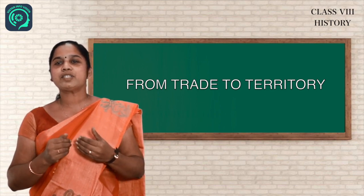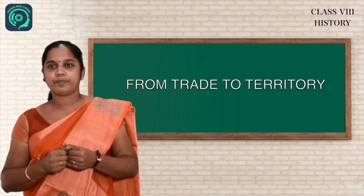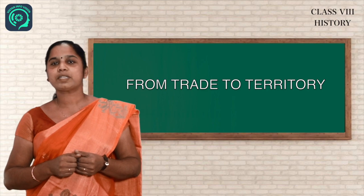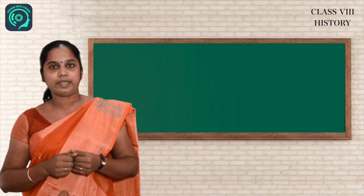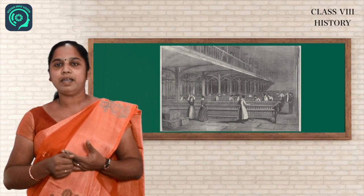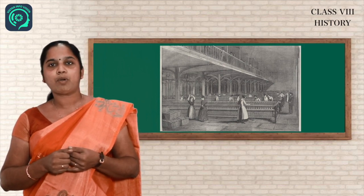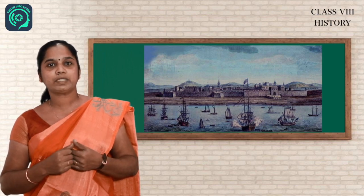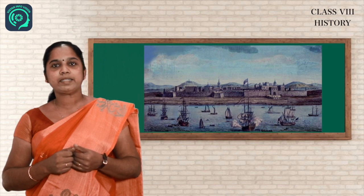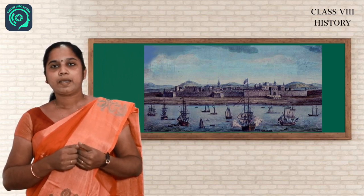Actually the first English factory was set up at Surat in 1608, but they established the factory at Bengal in 1651 on the banks of the river Hooghly. That was the base of their trade. The English traders called factories - they operated their trade from that factory.